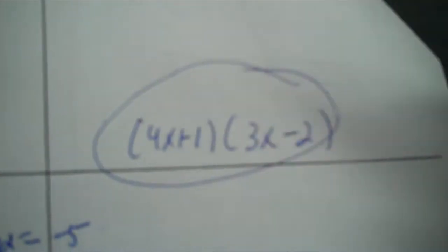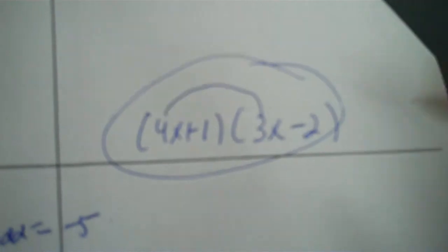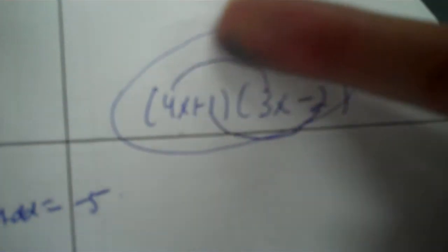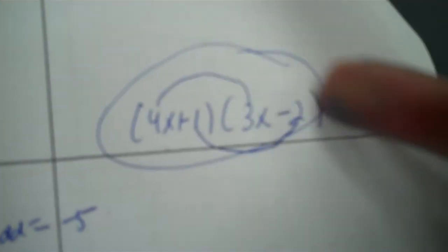You can always check your answer on a factoring trinomial: 4x times 3x should be 12x squared — it is. 1 times negative 2 should be the negative 2 — it is. And for the middle term, 4x times negative 2 plus 1 times 3 gives negative 8 plus 3, which is negative 5. It all works out.